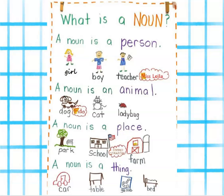A noun is a place — park, school, a farm. And a noun is a thing — a car, a table, a game, a bed.